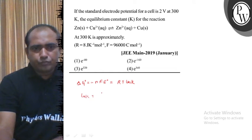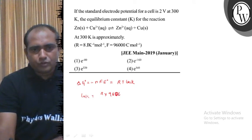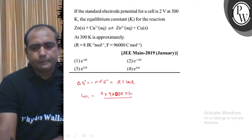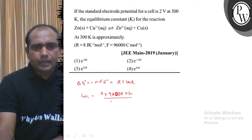This will be 2 × 96000 × 2 upon 8 × 300.